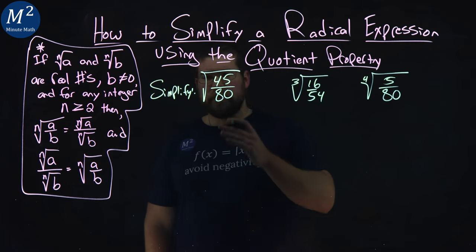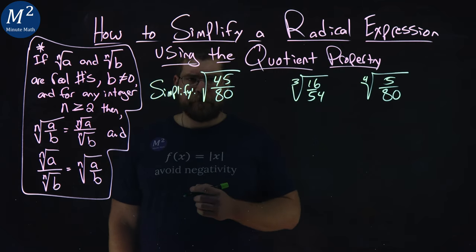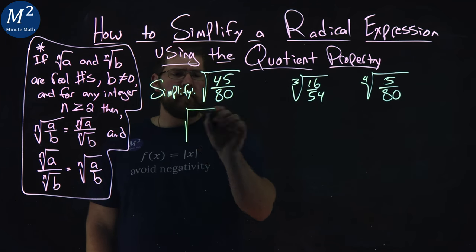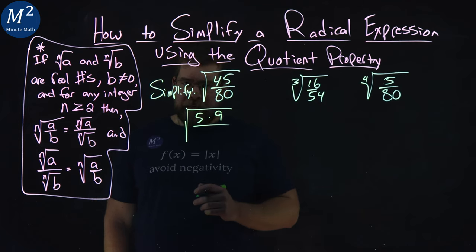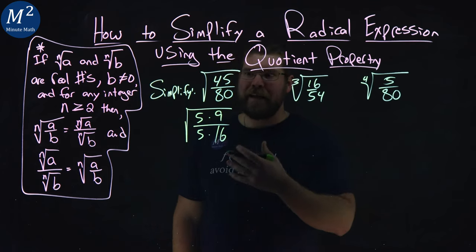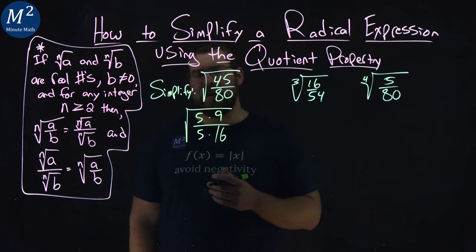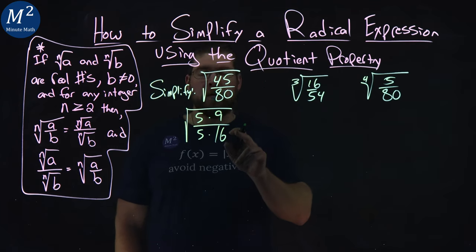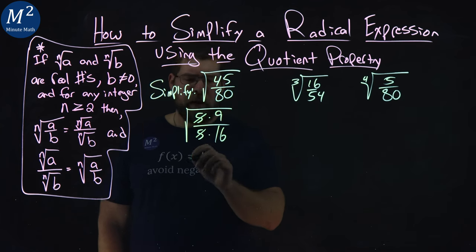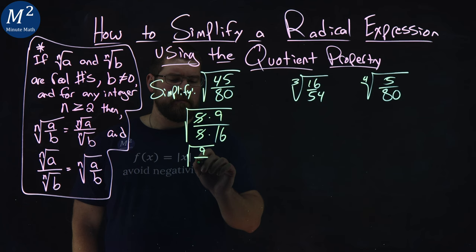So let's look at our first one here, the square root of 45 over 80. Well, 45 is 5 times 9. So I break this out: 45 to be 5 times 9 and 80 is 5 times 16. I'm trying to simplify what I can on the inside of the square root to get a perfect square in my numerator and denominator.